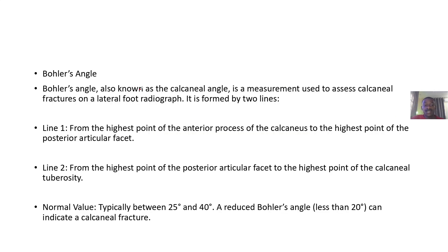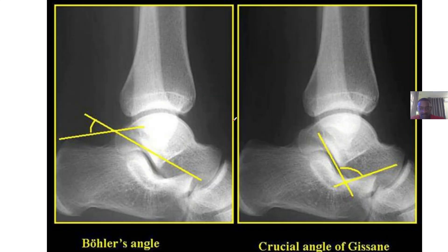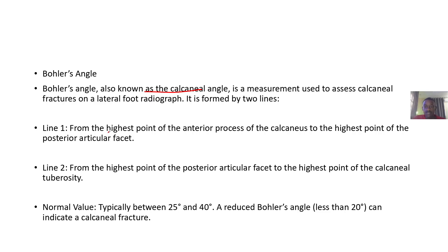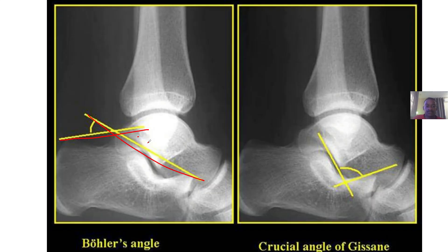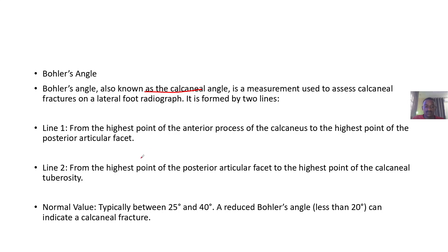Böhler's angle is also known as the calcaneal angle. It is a measurement used to assess calcaneal fractures on a lateral foot radiograph. It is formed by two lines: the first line runs from the highest point of the anterior surface of the calcaneus to the highest point of the posterior articular facet, and the second line runs from the highest point of the posterior articular facet to the highest point of the calcaneal tuberosity.